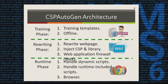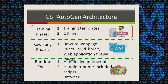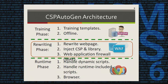CSP Autogen works in three phases: training phase, rewriting phase, and runtime phase. Before deploying CSP Autogen for a website, it first runs the training phase to build templates for that website. When these templates are ready, CSP Autogen runs in the rewriting phase to protect users on that website. In this phase, CSP Autogen sits between the client and the server. The preferred deployment is on the server side, such as running on the site's web application firewall (WAF).